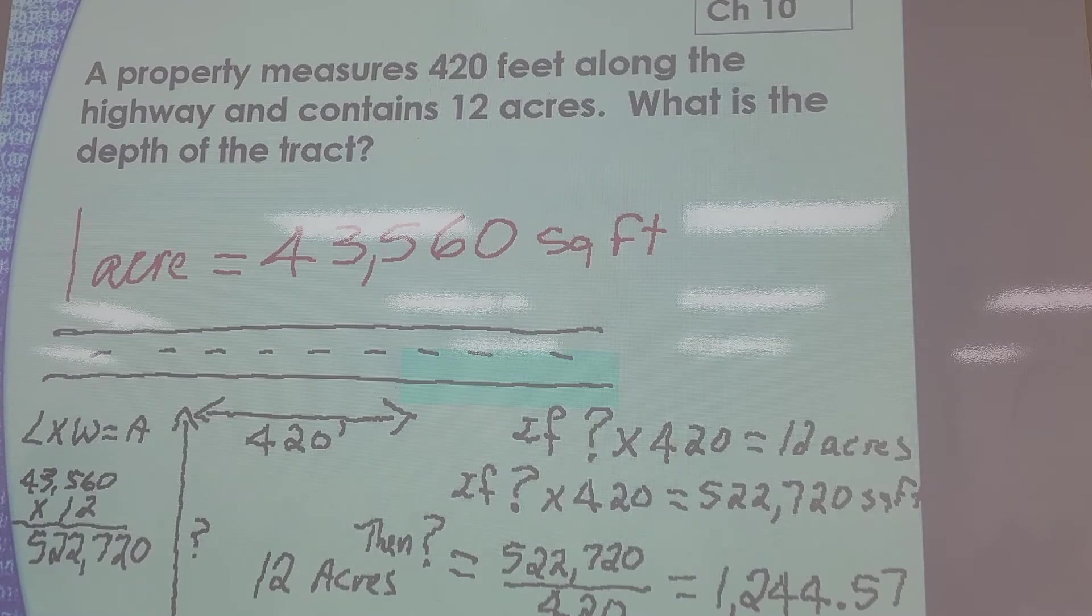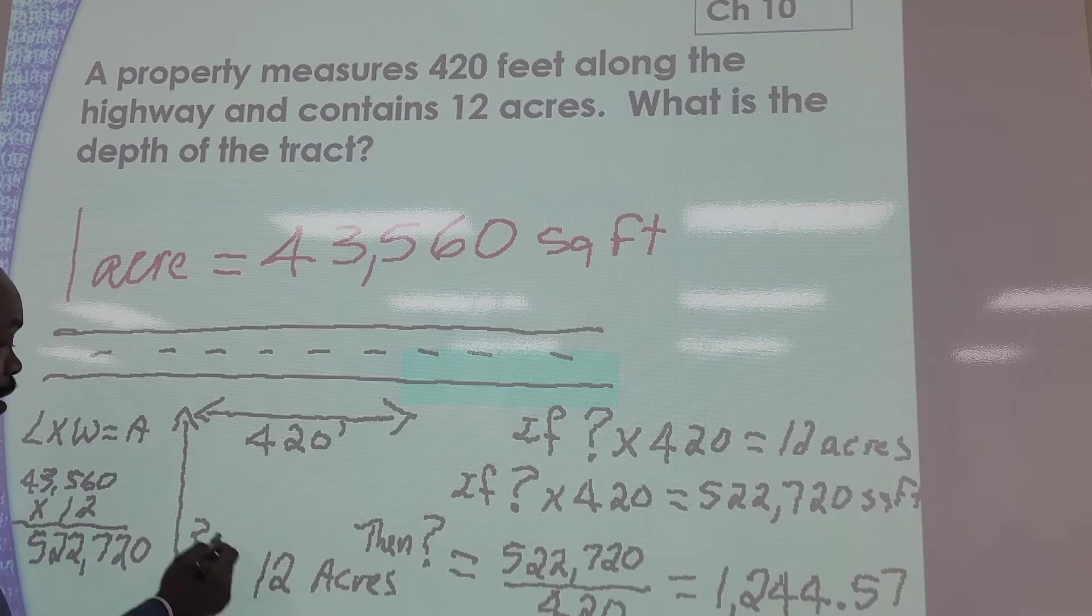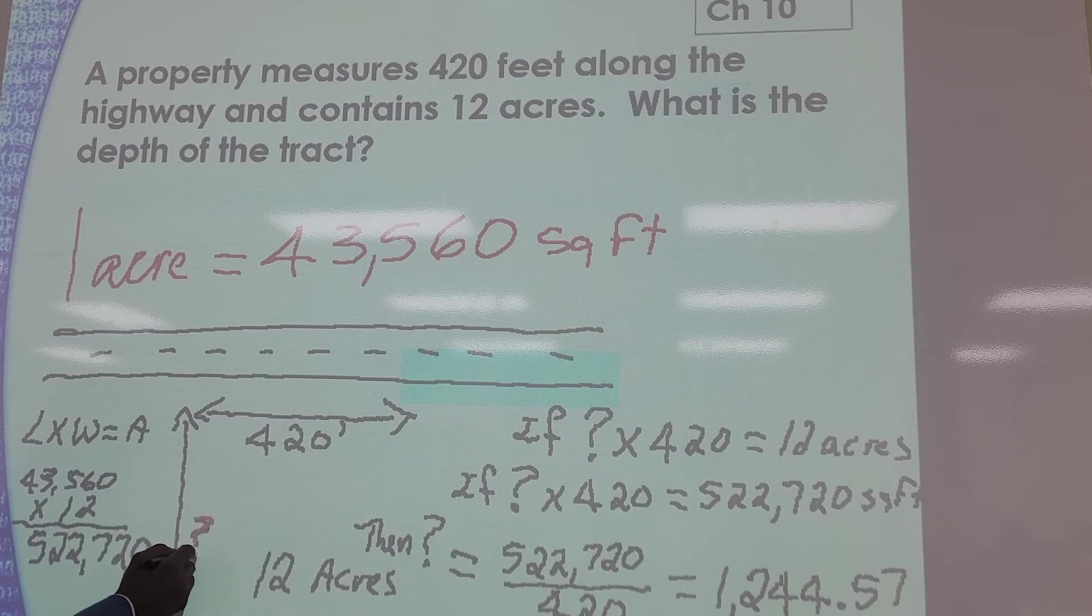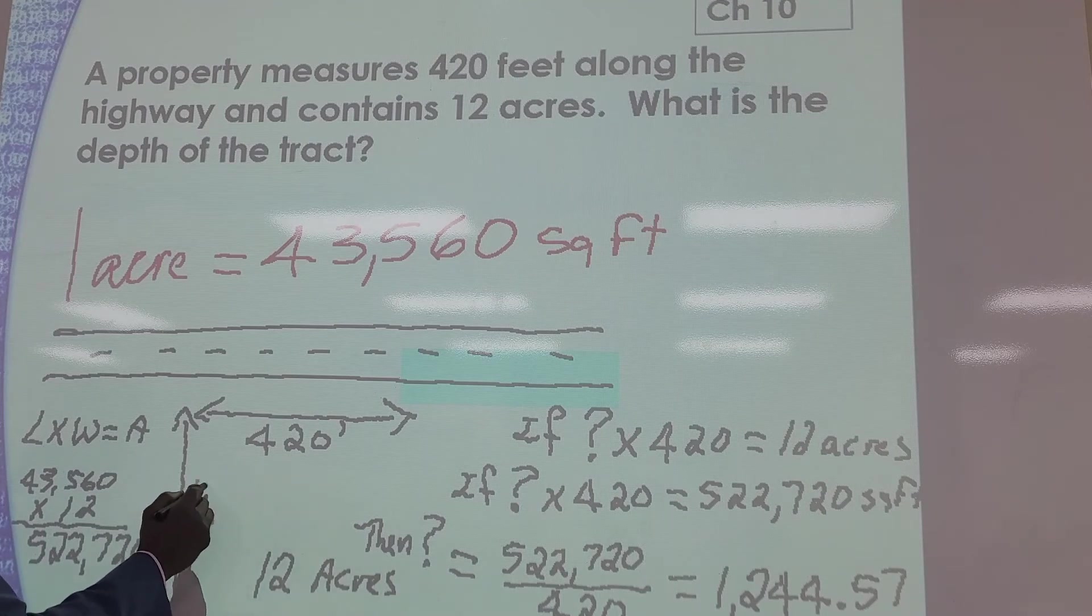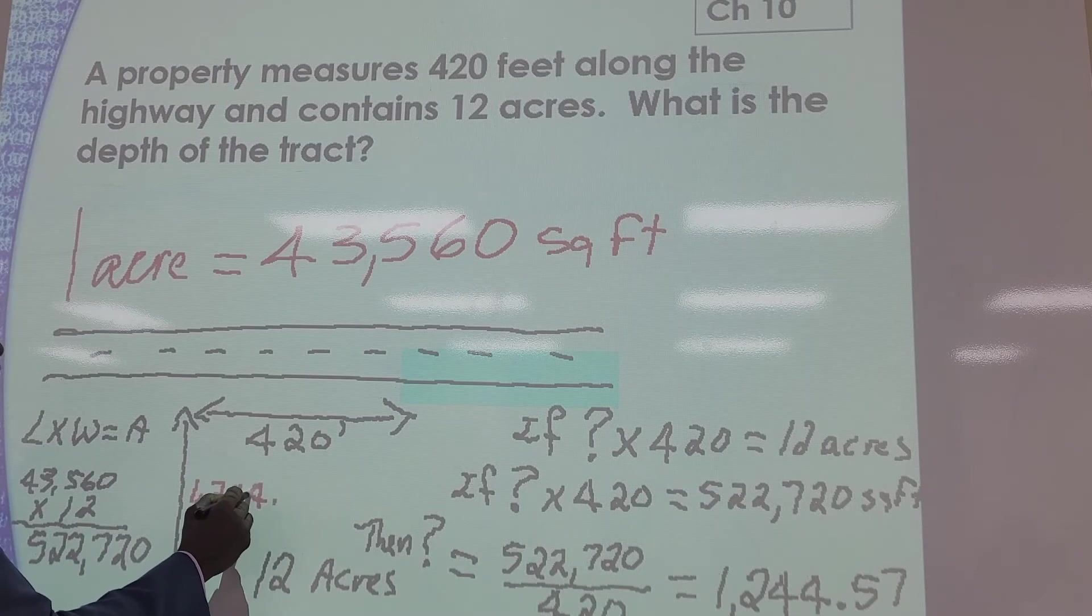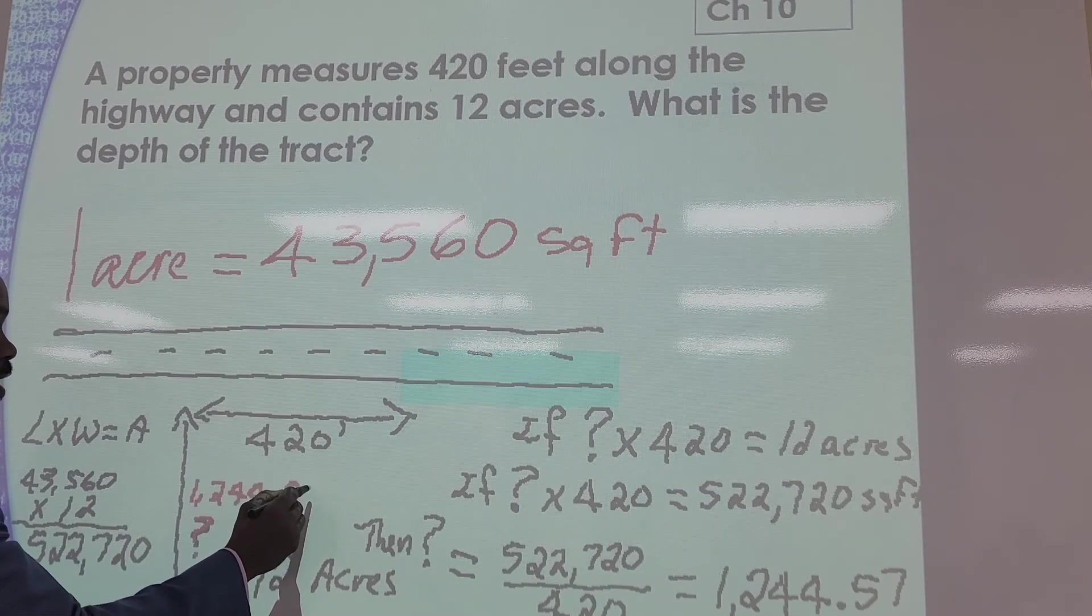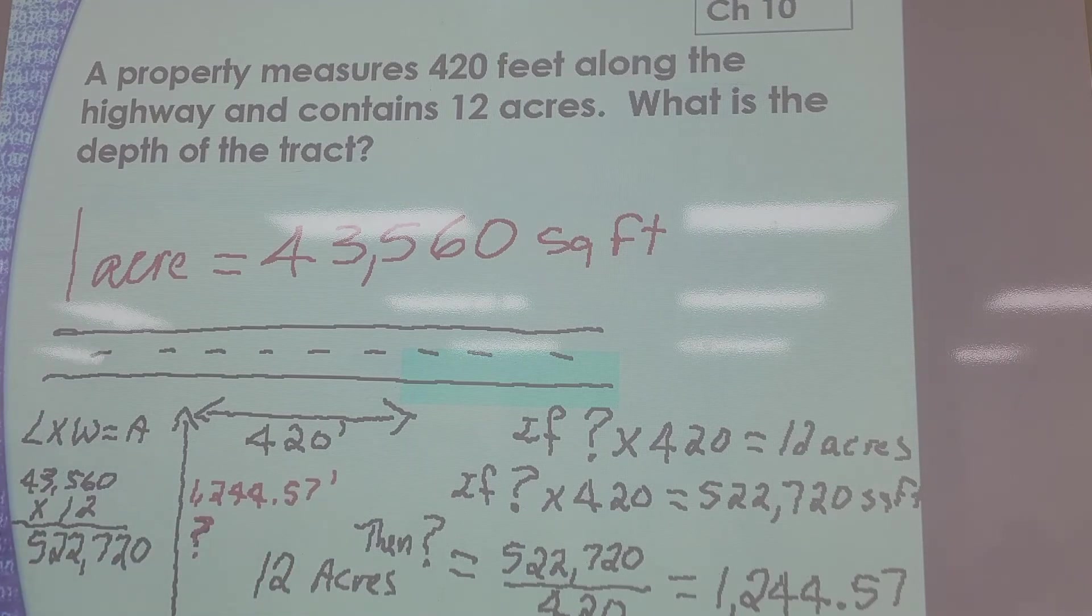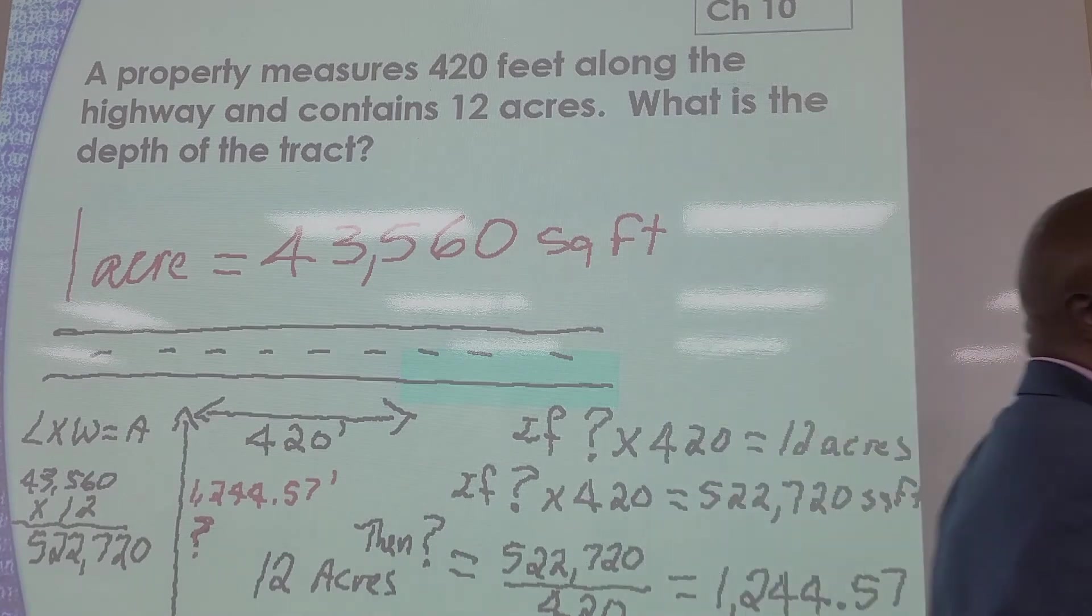This must be, so now we can say, now that we know it, the unknown would be 1,244.57 feet. So now you will take, if you know that's basically 12 acres, understood?